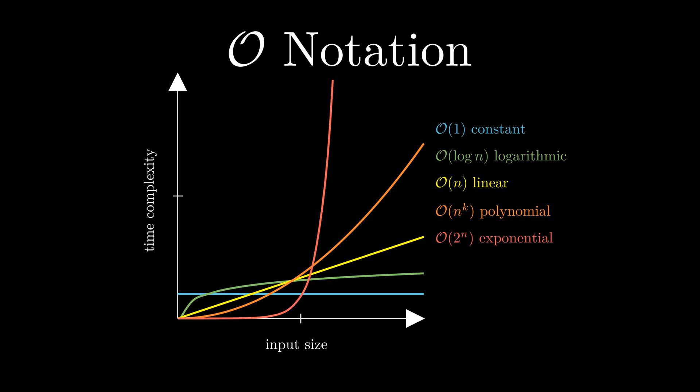For example, comparing two numbers is constant. Going through an array of n numbers to find the maximum is linear. And going through all possible binary strings of length n is exponential. This concludes our introduction of the O-notation.